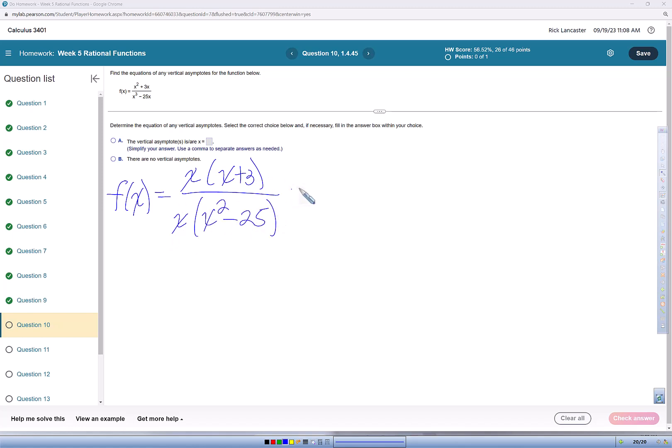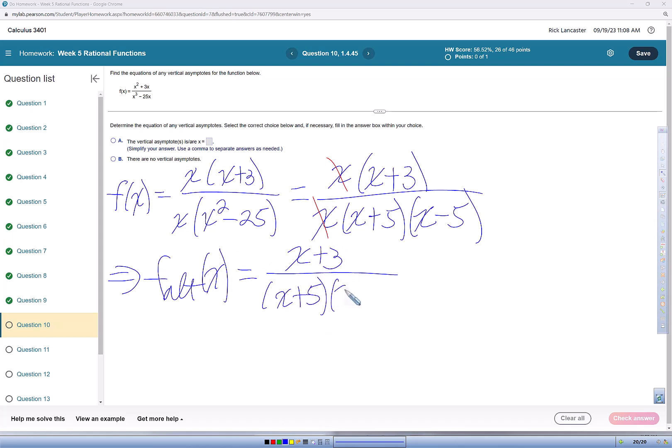And then that will further factor in the denominator doing the difference of two perfect squares x plus 5 times x minus 5. So we have two factors that will cancel out between numerator and denominator. So that gives me alternate f of x which is x plus 3 over x plus 5 times x minus 5.